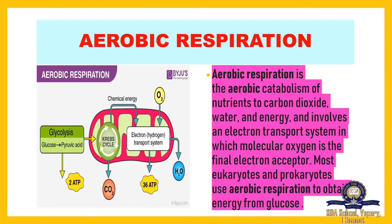Aerobic respiration is cellular respiration that takes place in the presence of oxygen. The glucose undergoes glycolysis, producing ATP, carbon dioxide, and water. In this complete reaction we get 36 ATP. ATP stands for adenosine triphosphate — it is the energy currency; food energy is converted into ATP. With the help of oxygen burning the digested food, energy is released. This is called aerobic respiration.